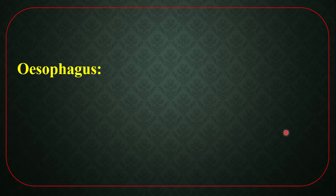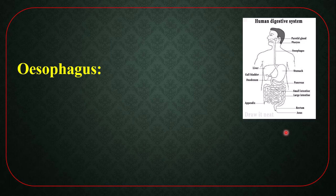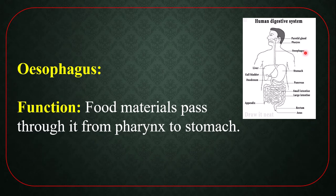Esophagus. The next portion after pharynx is esophagus. Follow the picture. The long tube-like structure between pharynx and stomach is esophagus. Function: food materials pass through it from pharynx to stomach.